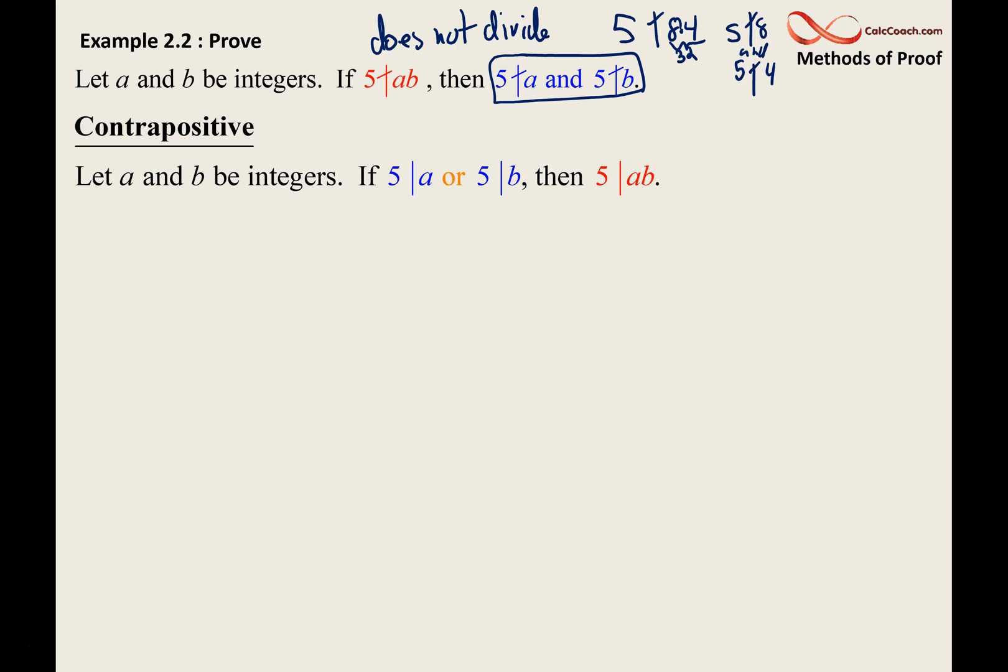You change it to an 'or' and you negate each. That's what we did. Negating a 'not divide' means 'divide,' and the inside changes from an 'and' to an 'or.' So that's what we start with. We're going to do a direct proof on this. If 5 divides a or 5 divides b, then 5 will divide the product of a and b.